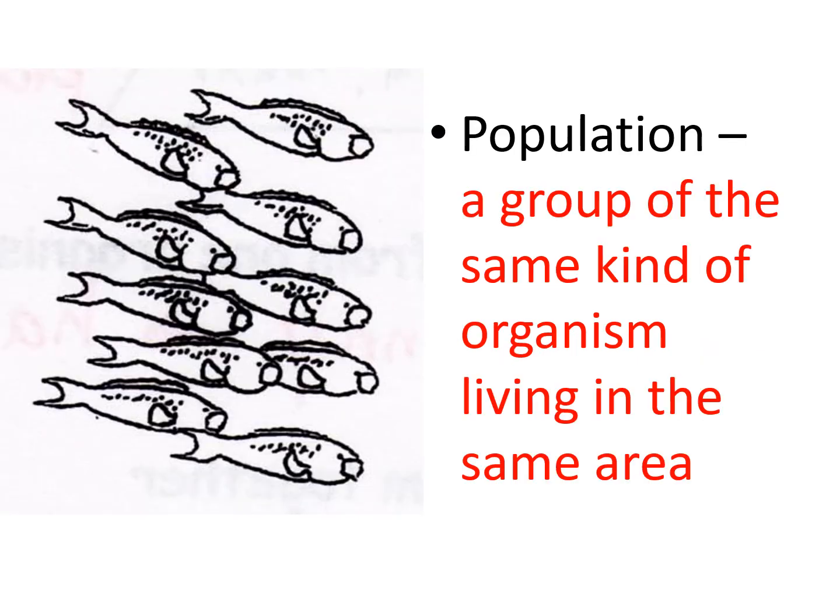A population is a group of the same kind of organism, and they have to be living in the same area in order to be considered a population — they have to be able to interact with each other. They're either competing, living cooperatively like a school of fish, or mating with each other. If they live in separate areas, it's not considered a population; it has to be the same kind of organism living close together.